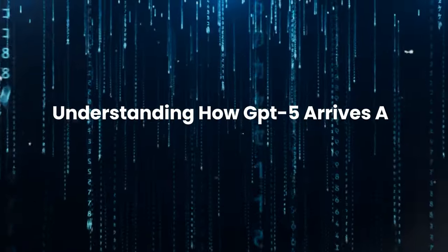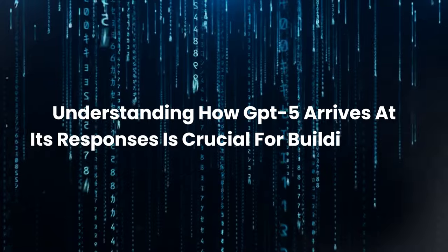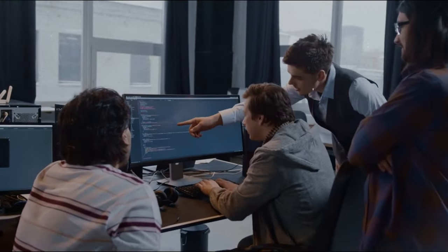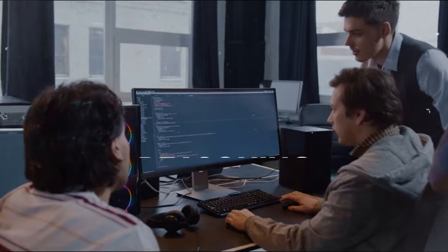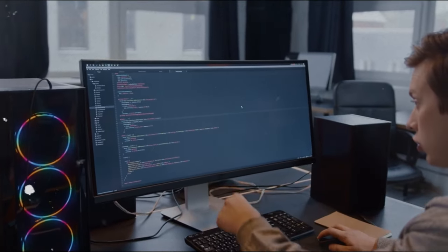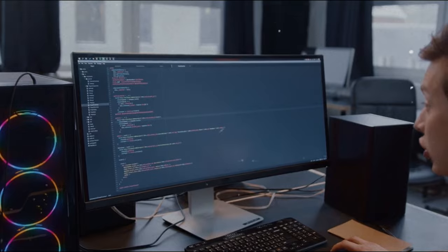Transparency and explainability: understanding how GPT-5 arrives at its responses is crucial for building trust. Developers should strive for transparency in how the model operates and explain the reasoning behind its outputs. This will be critical to ensuring accountability and responsible AI development.